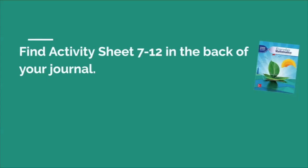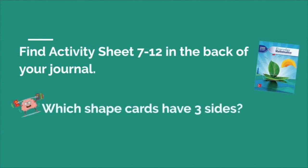Before we start this lesson, I want you to take a look at your math workbook. When you look at the very back pages, on the very bottom corner it'll say activity sheet. Please pull out pages 7, 8, 9, 10, 11, and 12 in the back of your journal. Rip it out, cut out the shapes, and then find which shape cards have three sides. Pause the video and press play when you are ready.